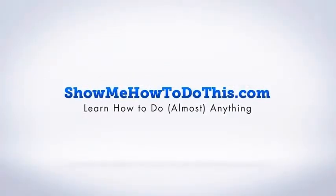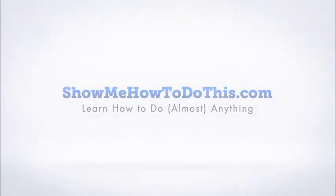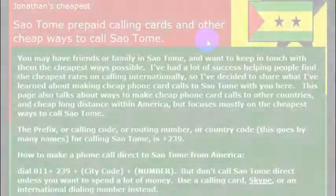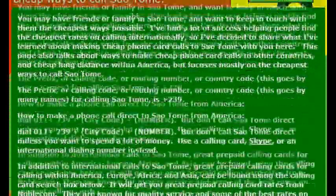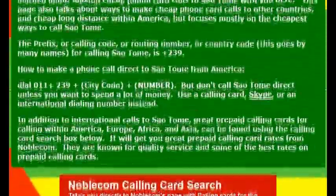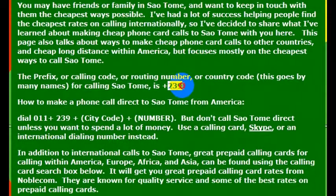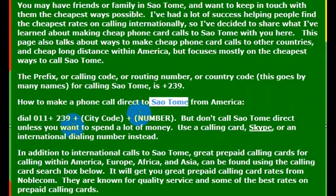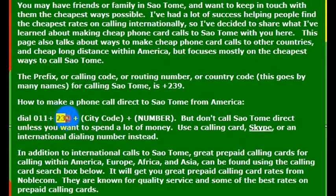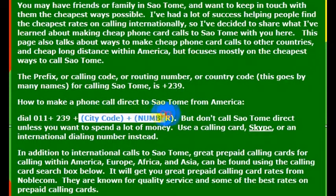If you were trying to reach São Tomé, what you want to do is know the country code for calling the country, which is very simple. All you have to do to call there is know that it's 239, and that would actually get you to São Tomé. So if you're calling from the United States, you would dial 011, then you would dial 239, the country code, and then the phone number you're trying to reach.